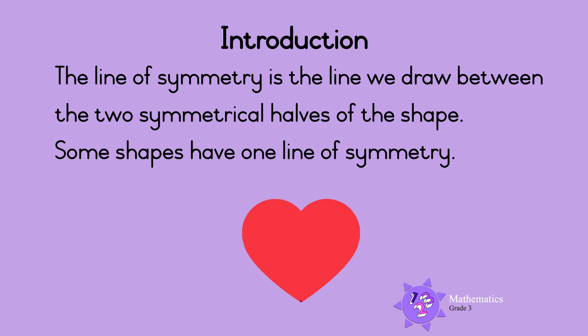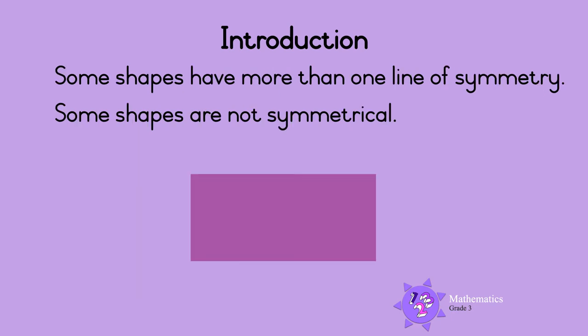The line of symmetry is the line we draw between the two symmetrical halves of the shape. Some shapes have one line of symmetry and some shapes have more than one line of symmetry. Some shapes are not symmetrical.